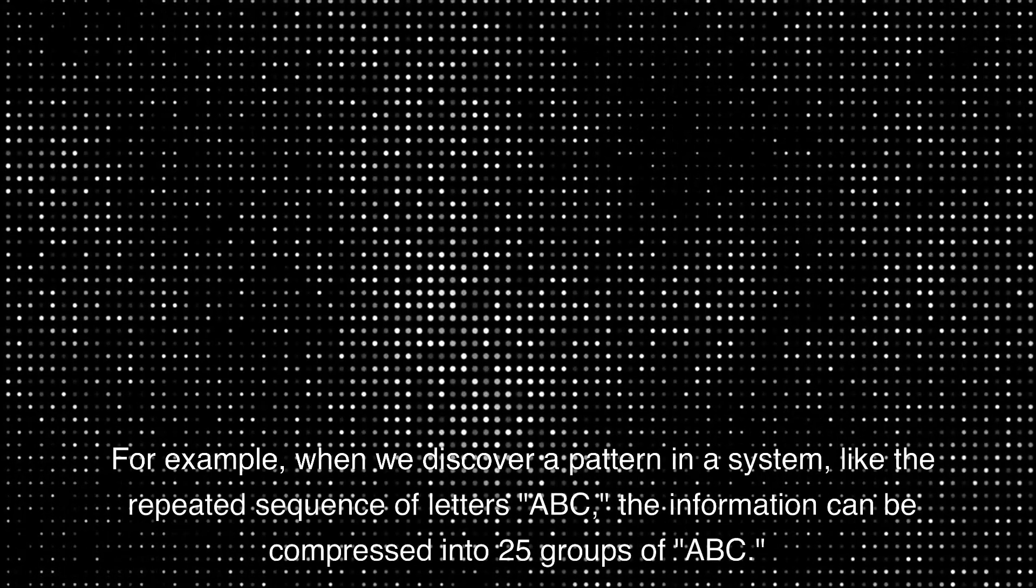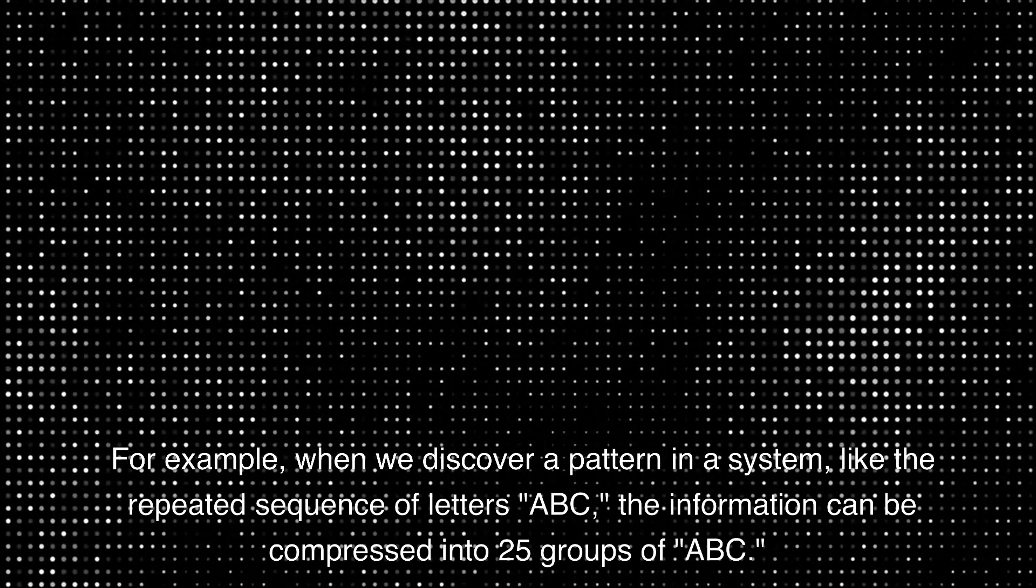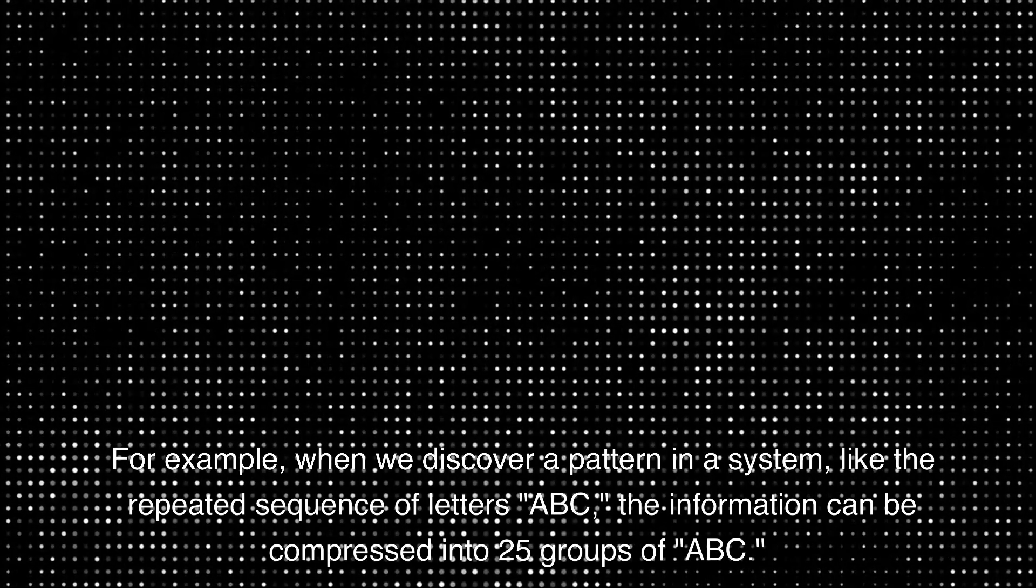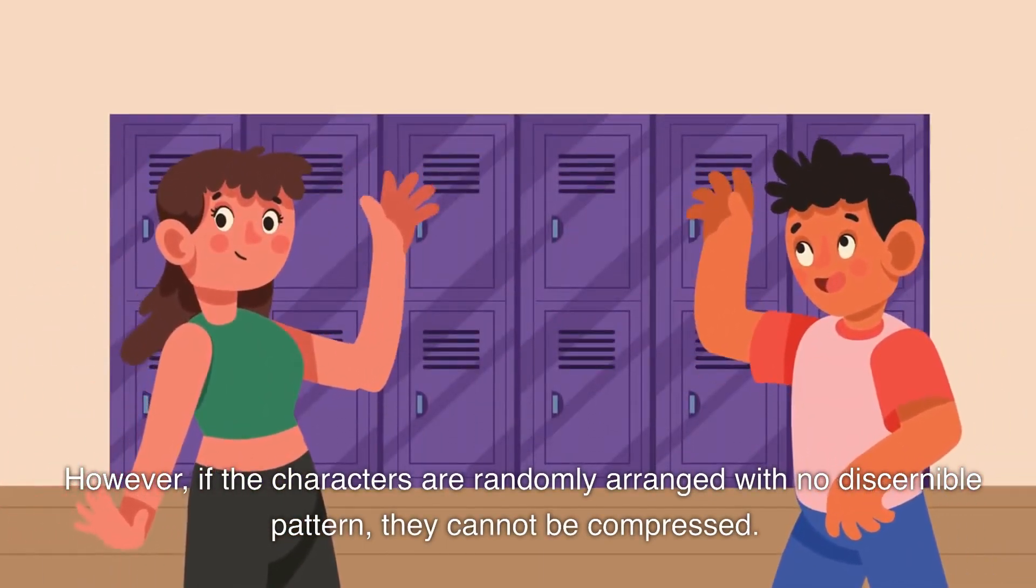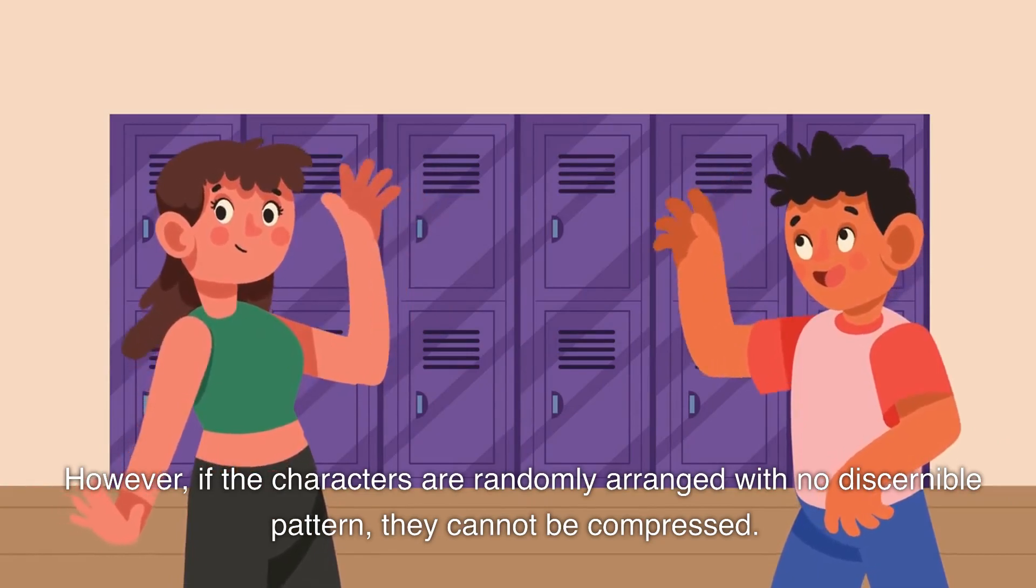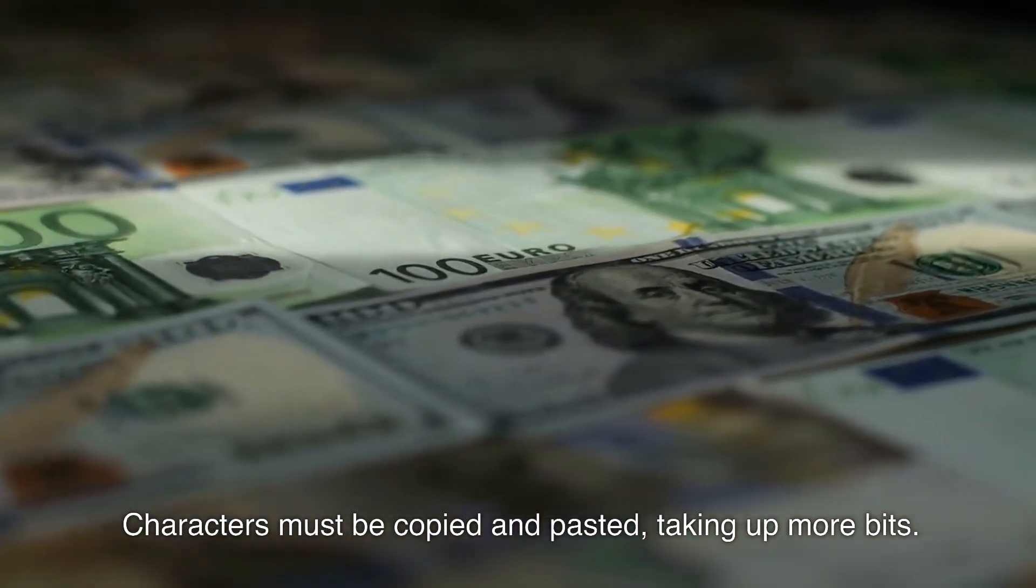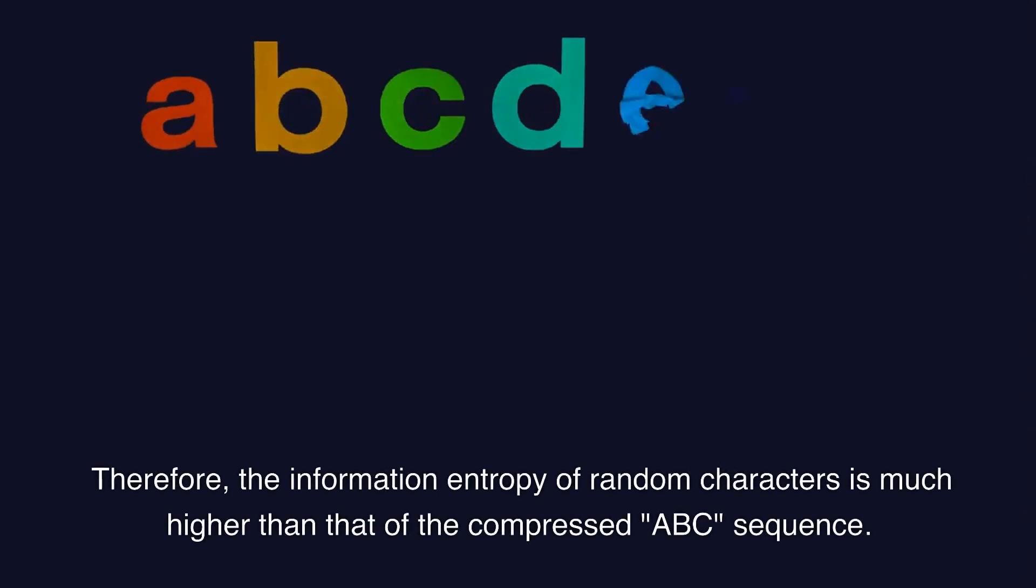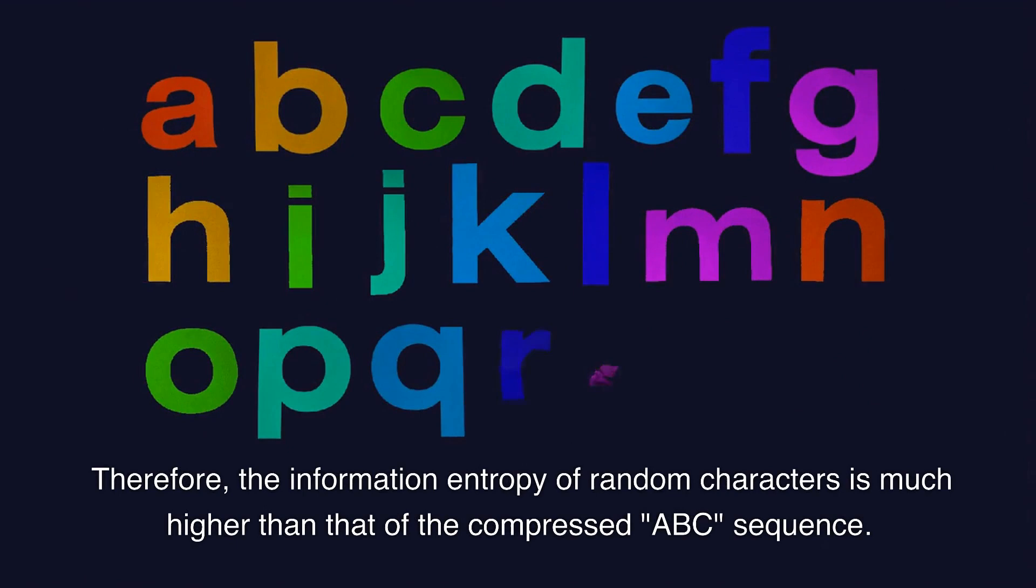For example, when we discover a pattern in a system, like the repeated sequence of letters ABC, the information can be compressed into 25 groups of ABC. However, if the characters are randomly arranged with no discernible pattern, they cannot be compressed. Characters must be copied and pasted, taking up more bits. Therefore, the information entropy of random characters is much higher than that of the compressed ABC sequence.